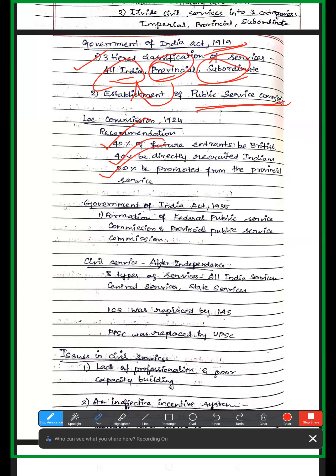The Government of India Act 1935 established the Federal Public Service Commission as well as Provincial Public Service Commissions to serve both the center and the provinces. This is how civil service evolved under the 1935 Act.